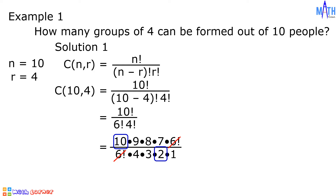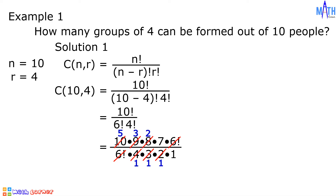10 and 2 share a common factor of 2: 10 divided by 2 is 5, and 2 divided by 2 is 1. 9 and 3 are divisible by 3: 9 divided by 3 is 3, and 3 divided by 3 is 1. 8 and 4 are divisible by 4: 8 divided by 4 is 2, and 4 divided by 4 is 1. Multiply the remaining factors. In the numerator, 5 times 3 times 2 times 7 is equal to 210. In the denominator, 1 times 1 times 1 times 1 is equal to 1. 210 divided by 1 is equal to 210.